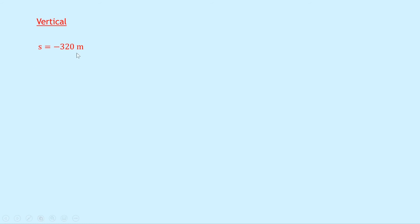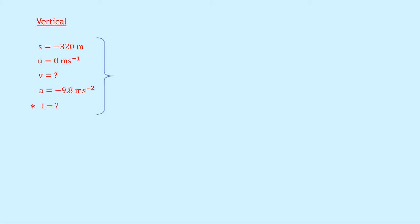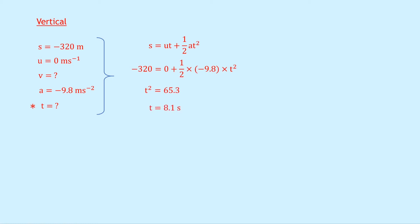Just like Question 1, for any object launched horizontally we treat horizontal and vertical motion separately. For the vertical motion using SUVAT: s equals minus 320 meters — negative because we define downwards as negative. The initial vertical velocity u is always 0 meters per second for this type of projectile. Final vertical velocity v is unknown. Acceleration a is minus 9.8 meters per second squared. Using s equals ut plus a half at squared: minus 320 equals 0 plus a half times minus 9.8 times t squared. Multiplying by 2 and dividing by 9.8 gives t squared equals 65.3, so t equals 8.1 seconds.